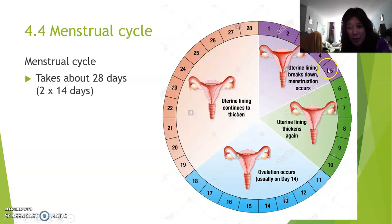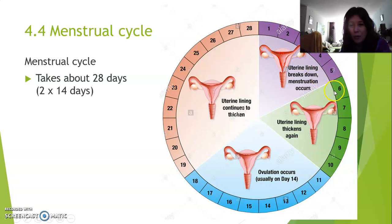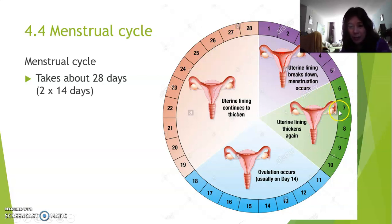Please understand: menstruation is part of the menstrual cycle. The menstrual cycle is 28 days; menstruation is only five days. So we start on day one, the first day of the period. Right at day six and all the way to day 28 — which is 23 days — that endometrium starts to thicken again, very slowly, all the way up until day 28.